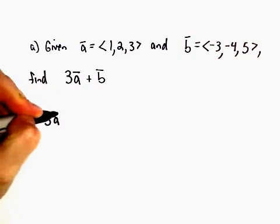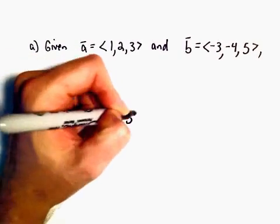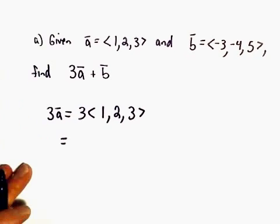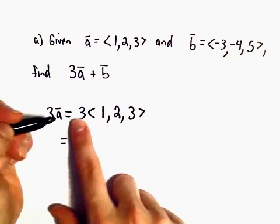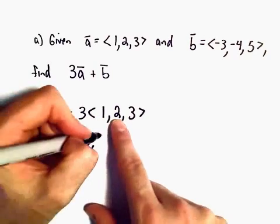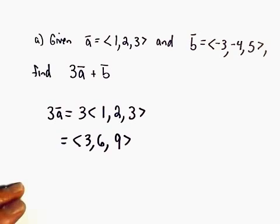So 3 times vector A, that's going to be 3 times the vector with components 1, 2, 3. All we have to do in this case is we just simply multiply each component by the number out front. So 3 times 1 will be 3, 3 times 2 will be 6, 3 times 3 will be 9. So that's our vector 3A.